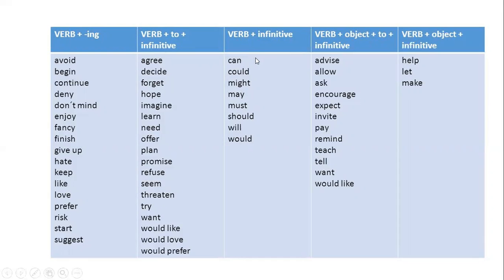Like 'can go,' not 'can to go.' Then there is verb plus object plus 'to' infinitive, like 'advise me to go,' or 'advise me to do.' So this is verb plus object plus 'to' plus infinitive.